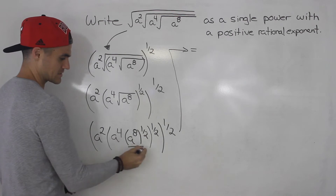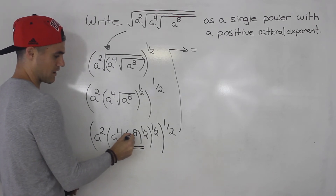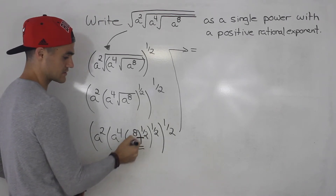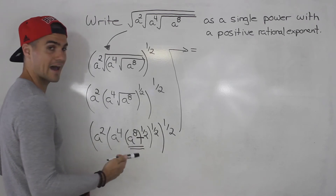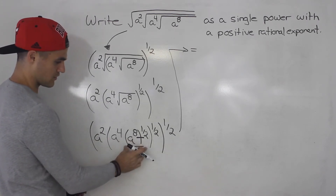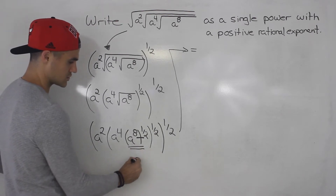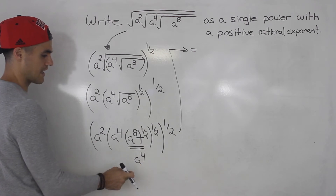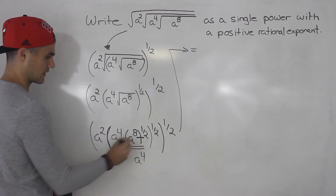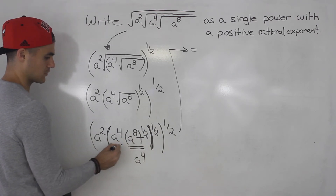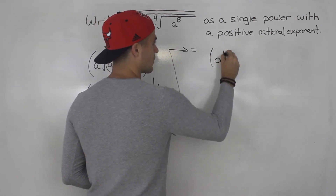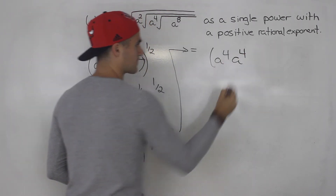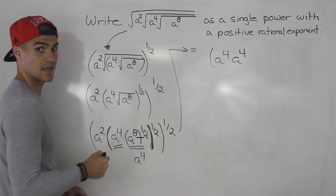The most inside bracket is a to the power of 8 to the power of a half. With exponent rules, we can multiply these two exponents: 8 times a half is 4. So this whole expression changes to a to the power of 4. I'm going to rewrite that bracket as a to the power of 4 times a to the power of 4.